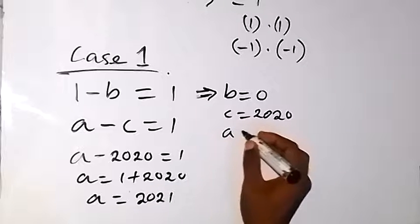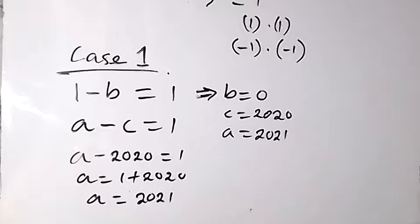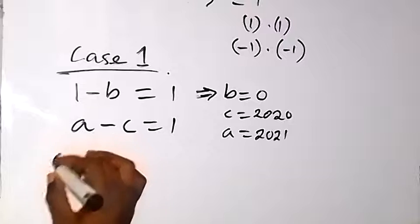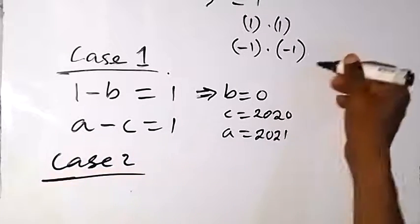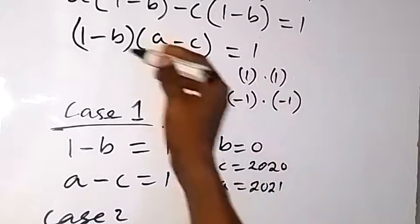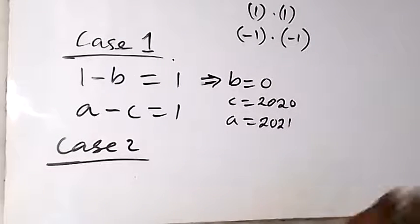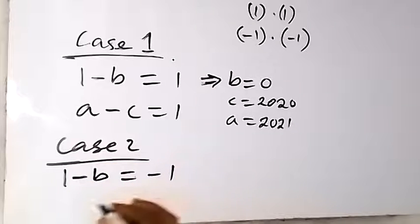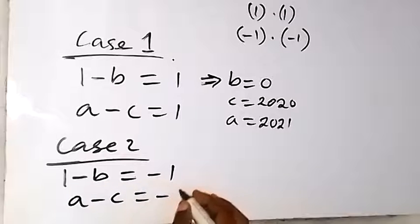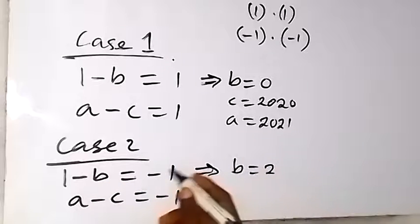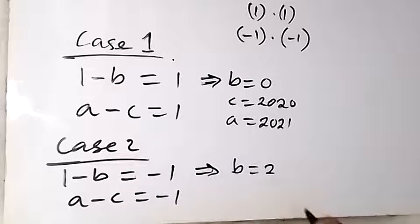So we got A equals to 2021 from the first case. Now let's look at the second case. For case 2, that is when we have the product as both negative — because negative 1 times negative 1 still gives us 1. It means we have 1 minus B equals to minus 1, and A minus C equals to minus 1. From the first equation, it implies that B equals to 2.